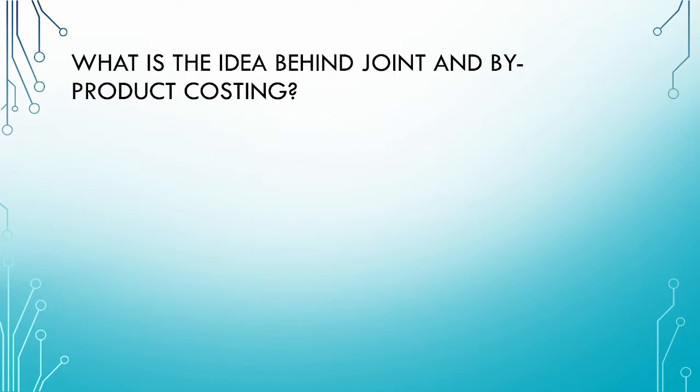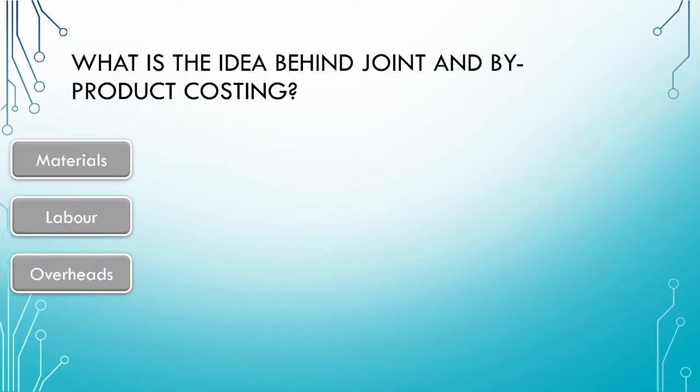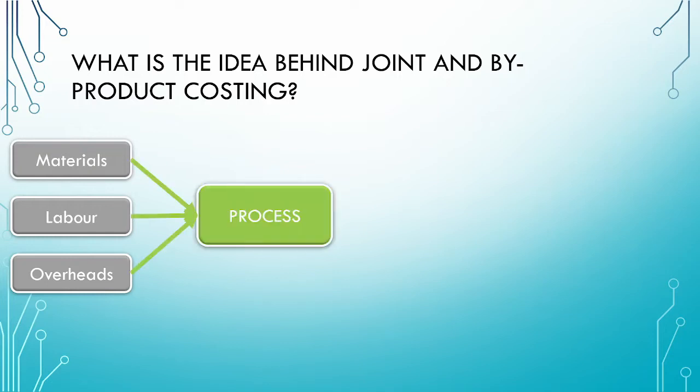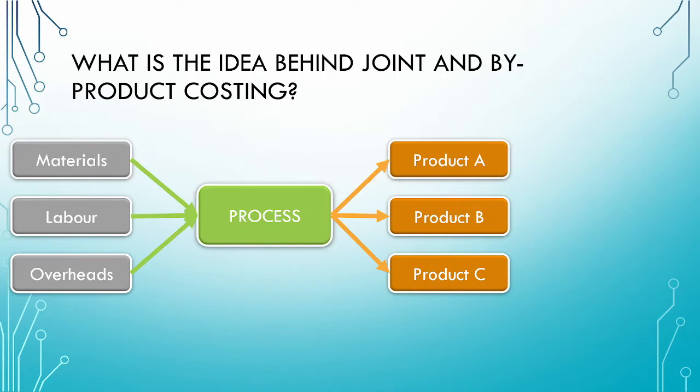Let us begin by revising the idea behind joint and byproducts. As with any other manufacturing process, we take our raw materials, labour and overheads and we subject them to the manufacturing process in order to get a product out at the end. However, unlike a single product process, we could get out two or three or even more products simultaneously from the process. A key point is that the products are produced simultaneously in a joint process.